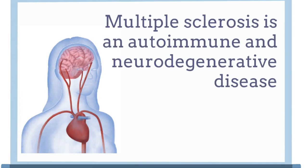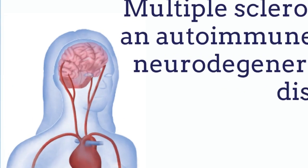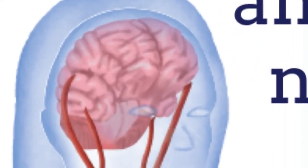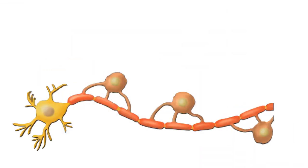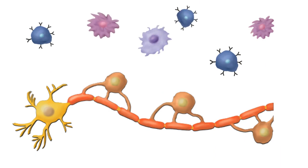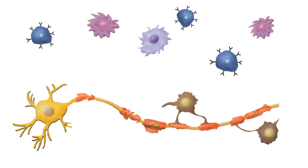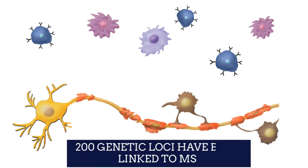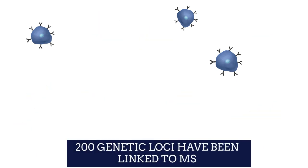Multiple sclerosis is a complex, multicellular disease. It is both an autoimmune and neurodegenerative disorder. MS is characterized by immune infiltration into the central nervous system, leading to attack on oligodendrocytes and loss of myelin. More than 200 genetic risk loci have been associated with multiple sclerosis.